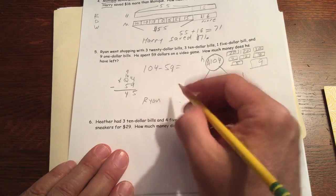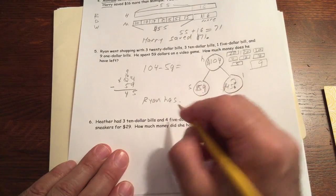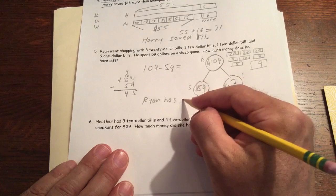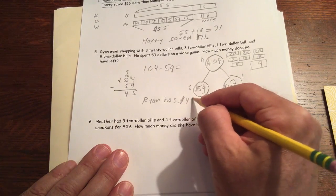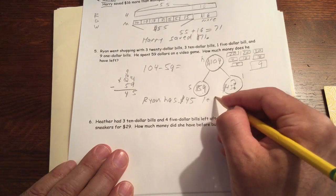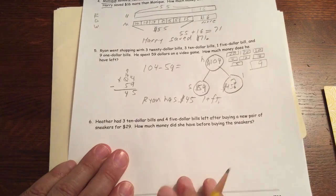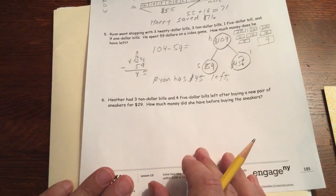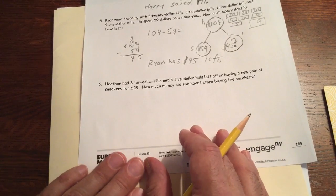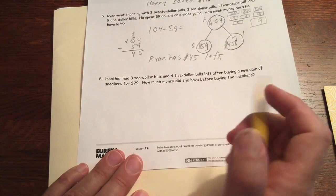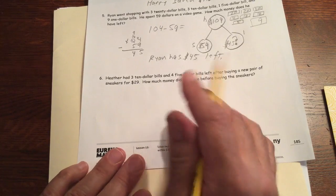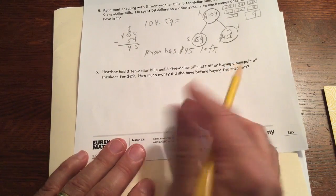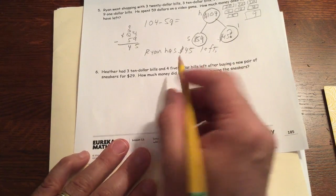So Ryan has $45 left. And one of the ways you can do these is just draw the money and keep drawing money until you have your total. Or draw the money and cross out the money. And sometimes it's a lot easier to do that way.